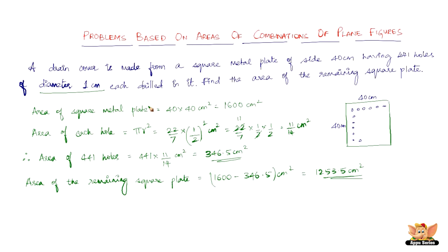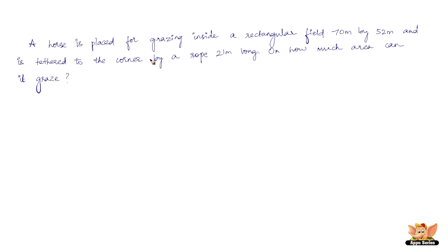That's all — it's a pretty simple and straightforward problem. We are just applying what we know about plane figures. It's a combination of plane figures; you may have a triangle in a square and be asked to subtract the area of the triangle to find the remaining part of the square. Let's quickly solve another problem, which is not very complex. A horse is placed for grazing inside a rectangular field 70 m by 52 m, and it is tethered to the corner by a rope 21 m long. On how much area can it graze?